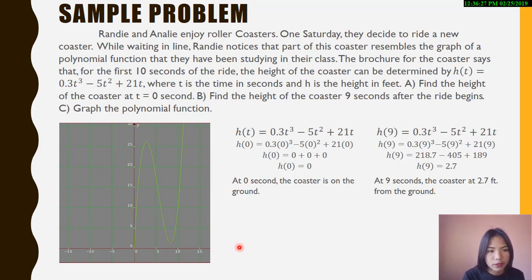As you can see in the graph, at 0 seconds, the coaster is on the ground. After 9 seconds, the coaster is at 2.7 feet from the ground.